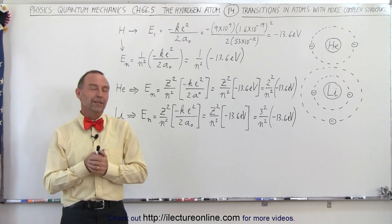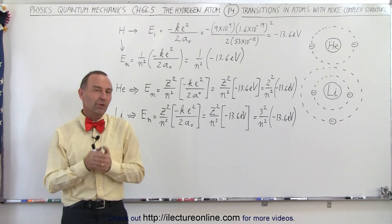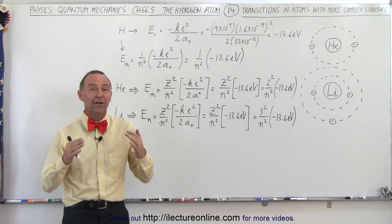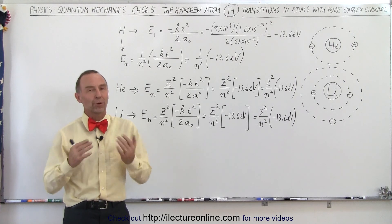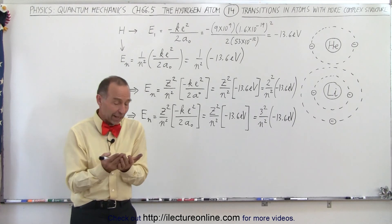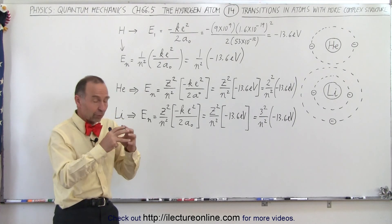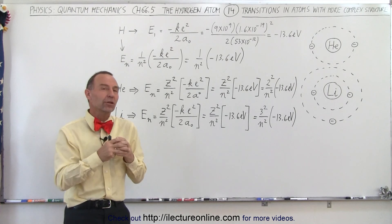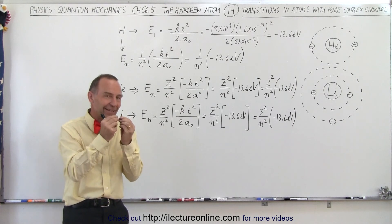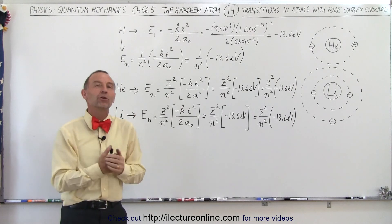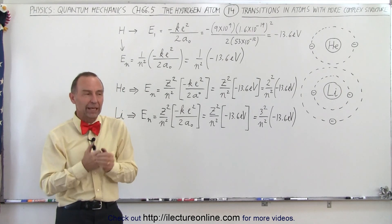Welcome to ElectronLine. So far we've been looking at just the hydrogen atom — the Bohr atom — and that's a very simple atom because it only has a single proton as its nucleus and a single electron in one of the orbits.